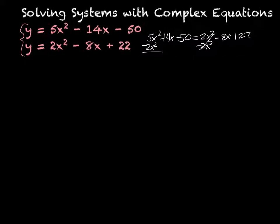And that's going to give me 3x² and then I add the 8x. So that would give me a negative 6x and finally I'm going to subtract 22. And that's going to give me a negative 72.